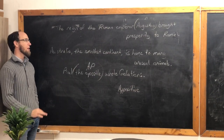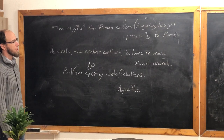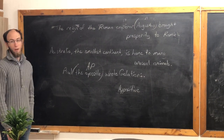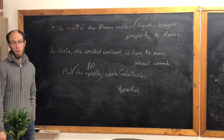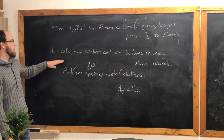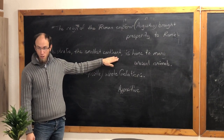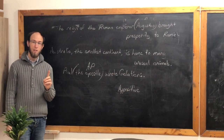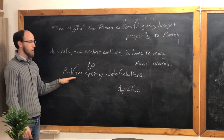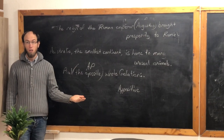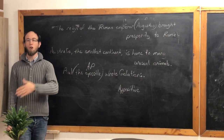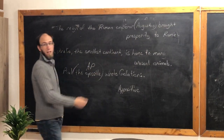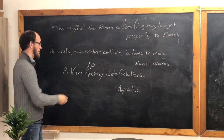What is the appositive in the next sentence? 'Australia, the smallest continent, is home to many unusual animals.' Continent is the appositive. The whole thing — 'the smallest continent' — this is all an appositive phrase. It's a long appositive phrase. Here is a trick: some appositives are short and we don't put commas around them, but when the appositive phrase is long, we put commas around it. The commas help you know where the appositive starts and stops.